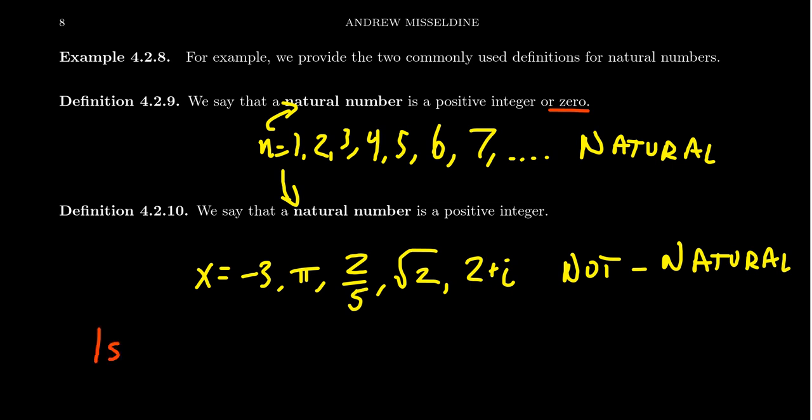Is zero natural? Is it a natural number? Well, with the first definition, the answer is yes. Because the definition says a natural number is either a positive integer or zero. Zero is included inside of the natural numbers. But if you adopt the second definition of natural number, then it turns out that zero is not a natural number. And so whether zero is a natural number or not comes down to which definition of natural numbers are you using?